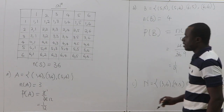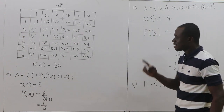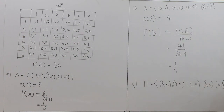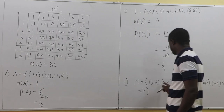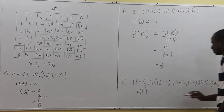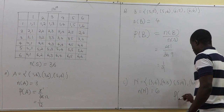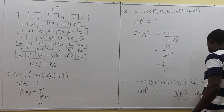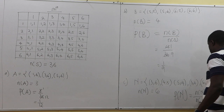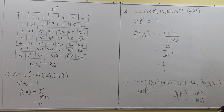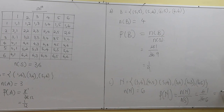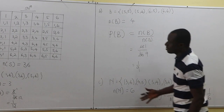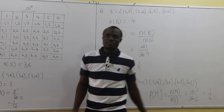So the number of outcomes in event N is six. Probability of N equals number of events over sample space. Number of favorable outcomes is six, sample space is 36, so P(N) = 6/36 = 1/6.